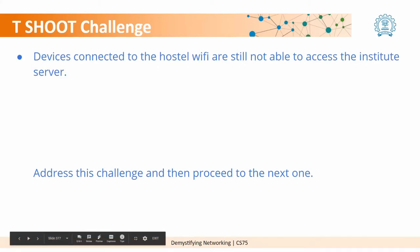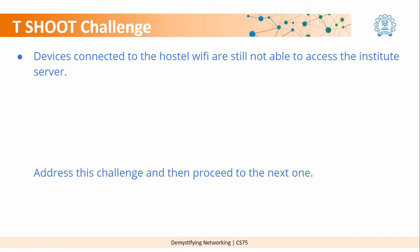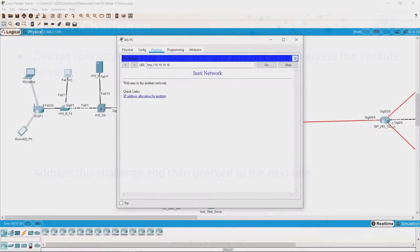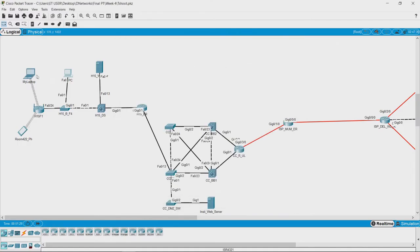The next challenge is that the device connected to the hostel Wi-Fi is still not able to access the institute server. We did not check the other devices, so let us go back to the Packet Tracer file and see what is up with the network devices.